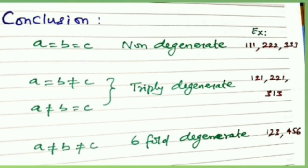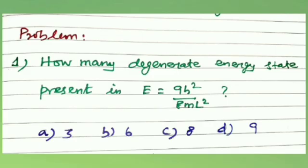Now let us look at example problems. Problem one: how many degenerate energy states are present for E = 9h²/8mL²? You need to find all combinations of (nₓ, nᵧ, n_z) such that nₓ² + nᵧ² + n_z² = 9.